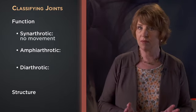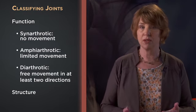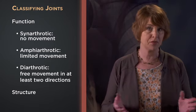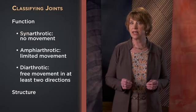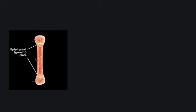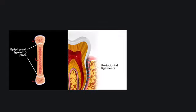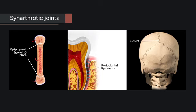Synarthrotic joints do not move at all. Amphiarthrotic joints provide a bit of limited movement, while diarthrotic joints are the typical articulations we think of because they provide free movement in at least two directions. The prefix 'syn' means united or with, like in the words synthesis or synchronous. A growth plate in a child's bone, a tooth in a dental socket, or the cranial sutures — the joints between bones of the skull — would all be examples of synarthrotic joints. None of those articulations allow movement, so they won't be a main focus of this course.